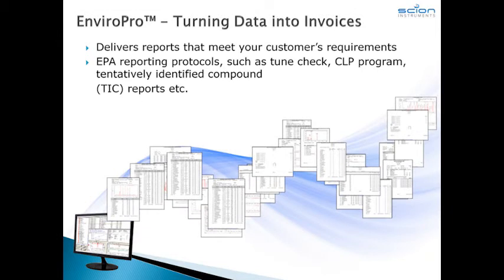Scion innovation in hardware improves your sample-to-raw-data file. CBS and Easy-SIM take care of those pain points involving raw data to processed results. Now, EnviroPro software takes your data and turns it into information for the bench chemist, QAQC, lab management, and, of course, the customer.